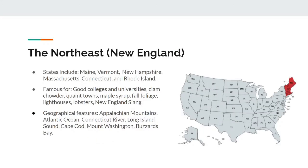First up, the Northeast, more commonly referred to as New England. States here include Maine, Vermont, New Hampshire, Massachusetts, Connecticut, and Rhode Island. It's famous for good colleges and universities, clam chowder, quaint towns, maple syrup, fall foliage, lighthouses, lobsters, and New England slang.